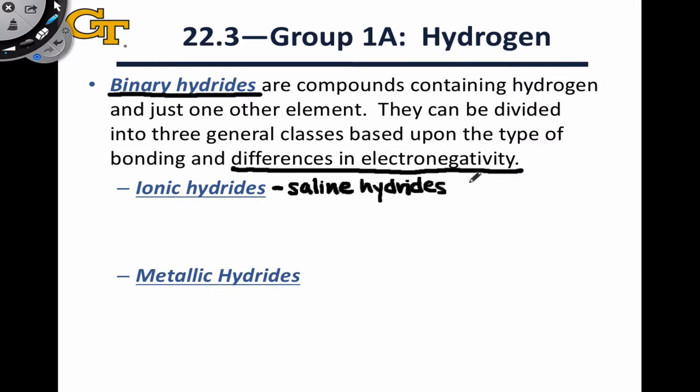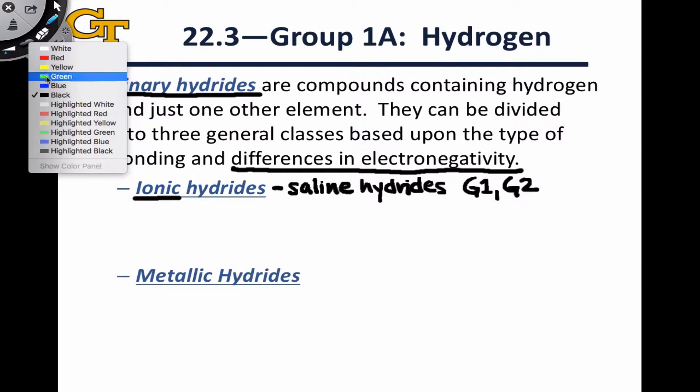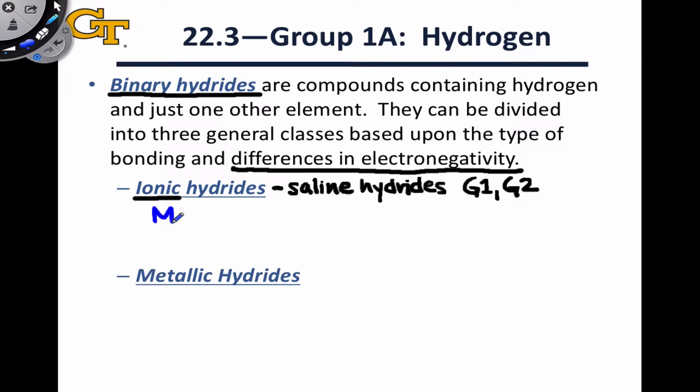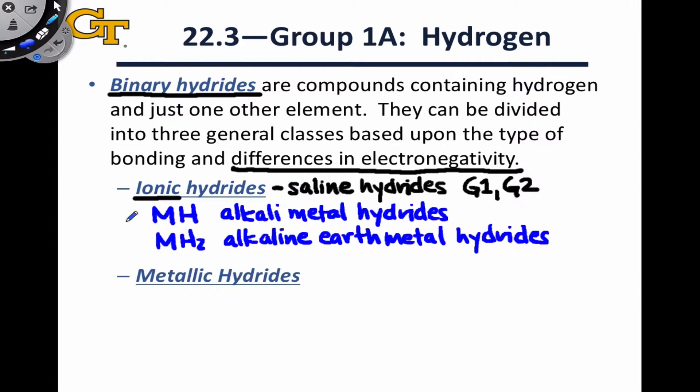These typically involve group 1 or group 2 alkali metal or alkaline earth metal cations along with hydrogen. So the bonding here is ionic, and as a general formula, we might write MH for the alkali metal hydrides or MH2 for hydrides of the alkaline earth metals.